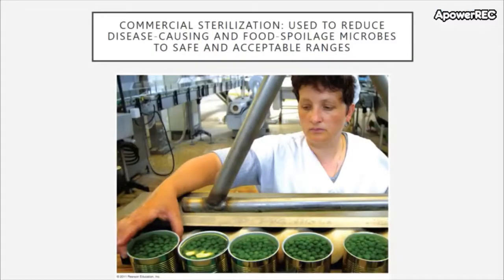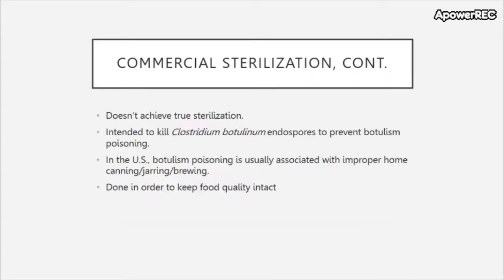There's something called commercial sterilization, which is not to be confused with sterilization itself. Commercial sterilization is less vigorous — it's used to reduce disease-causing and food-spoilage microbes to safe and acceptable ranges, so it doesn't achieve true sterilization. However, microbes like Clostridium botulinum which produce endospores are destroyed in this process, thereby preventing people from getting botulism poisoning. Botulism is usually associated with improper home canning, jarring, or brewing.